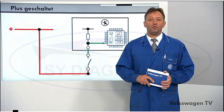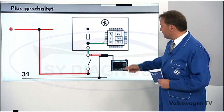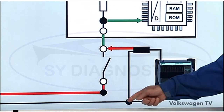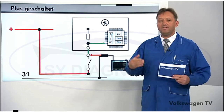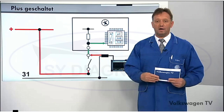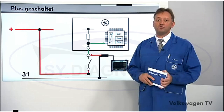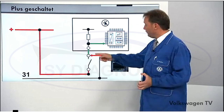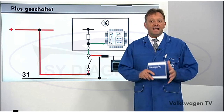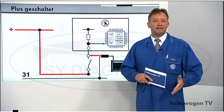If we connect the DSO to measure the input signal into the control unit, we connect the positive line of the DSO here and the earth line to earth. If the switch is open, we can measure the controller voltage. If the switch is closed, we can measure the onboard voltage, because it wouldn't matter whether we measure here or there if the switch was okay. This applies to all positive switched lines that send a signal to the control unit.